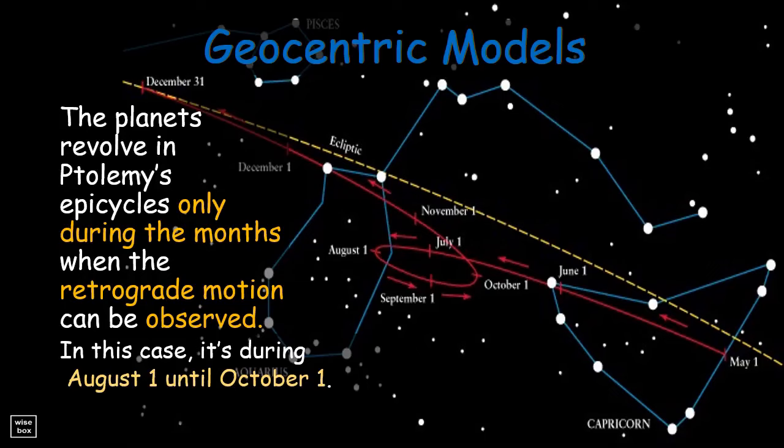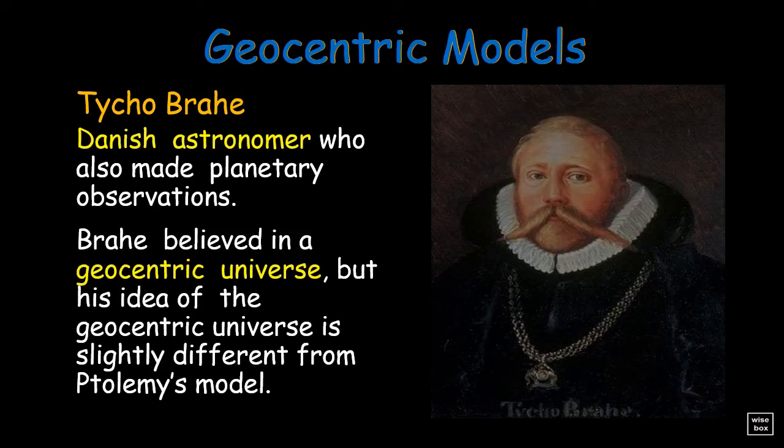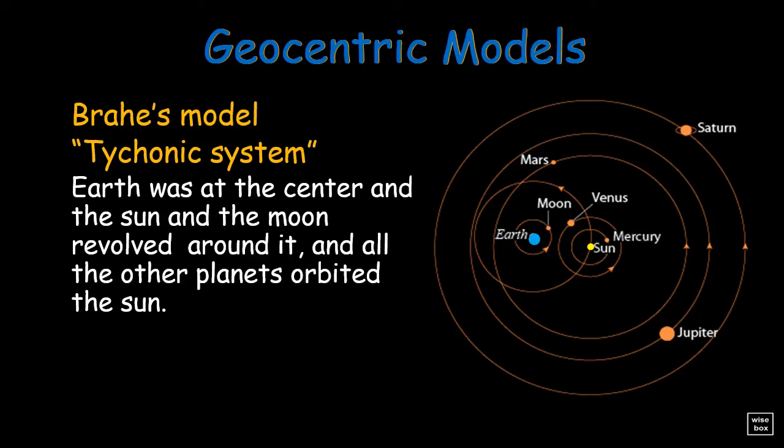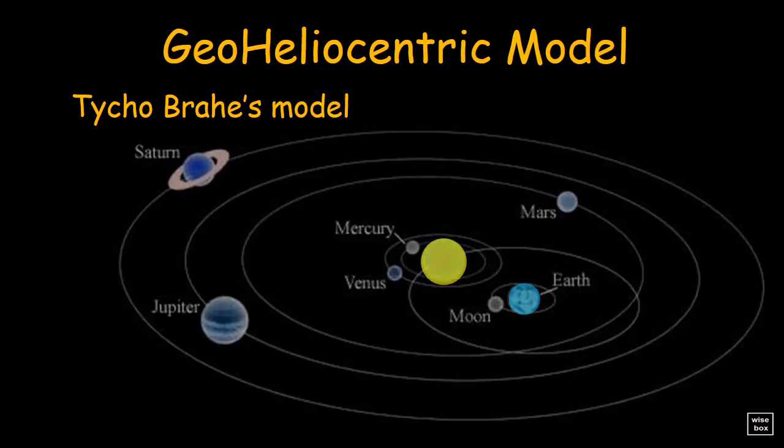Tycho Brahe, a Danish astronomer who also made planetary observations. Brahe believed in a geocentric universe, but his idea of the geocentric universe is slightly different from Ptolemy's model. In the Tychonic system, Earth was at the center, the Sun and the Moon revolved around it, and all the other planets orbited the Sun. Such a model was a type of geoheliocentric system. Here is an illustration of the geoheliocentric model of the universe by Tycho Brahe.